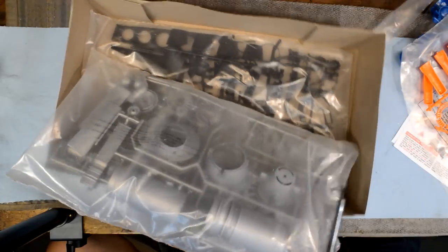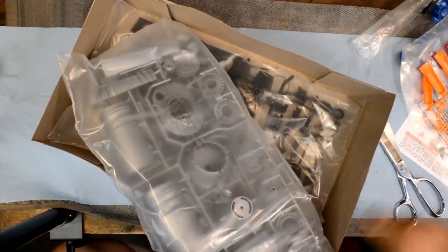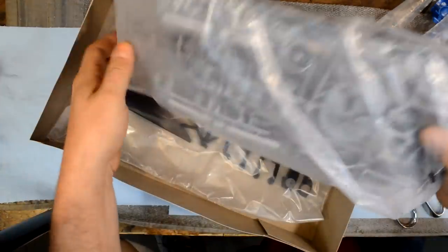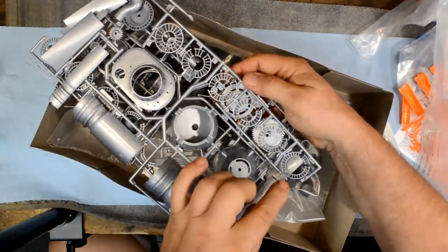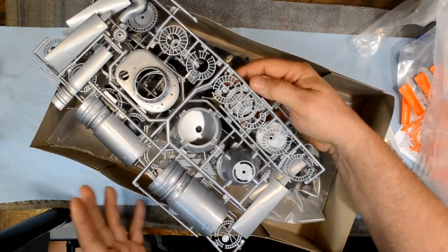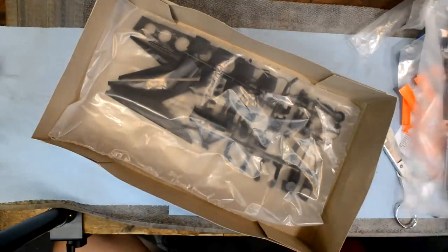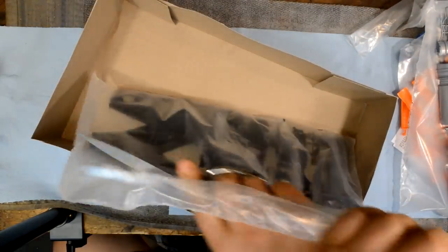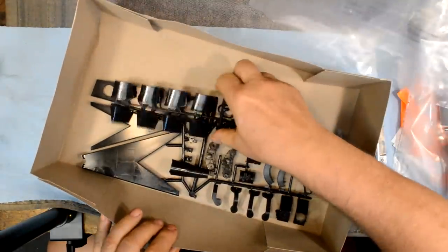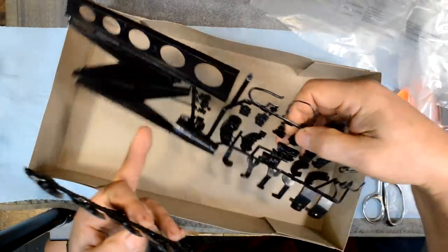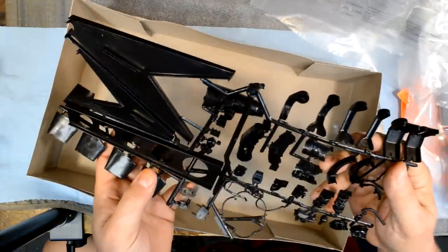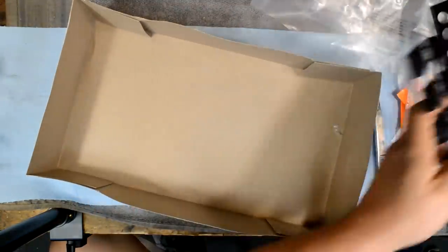Propeller blades - this thing has variable pitch propeller blades in the kit. Then we have the boots for the propellers, fuel lines, all the accessory cases and the stand. The stand is going to be important because this is going to be difficult to work on unless you can stand it up. That's the inside of the box.